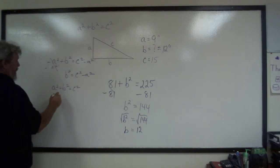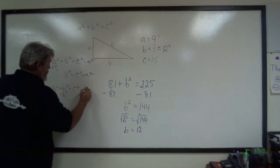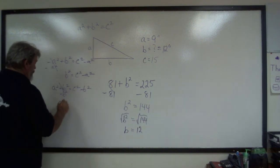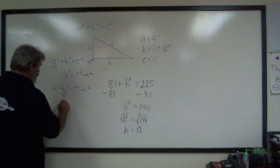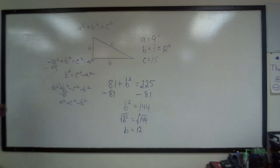Or I could go ahead and do A squared plus B squared equals C squared. I could subtract B squared. They'll cancel each other out. We'll leave A squared equals C squared minus B squared.